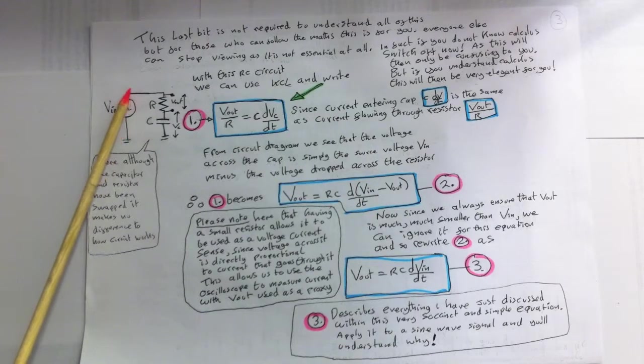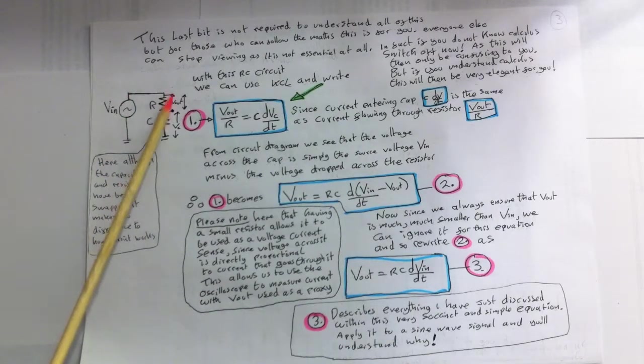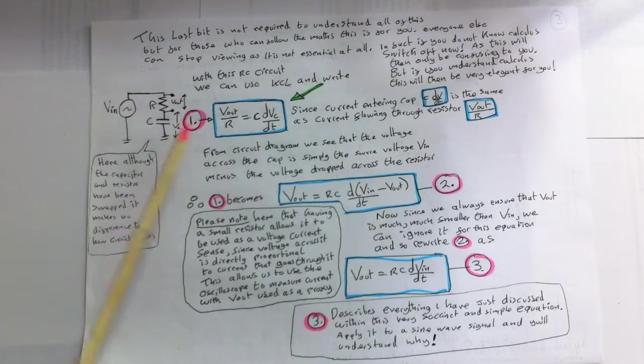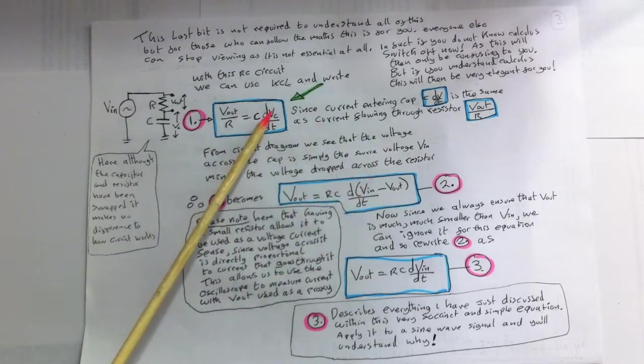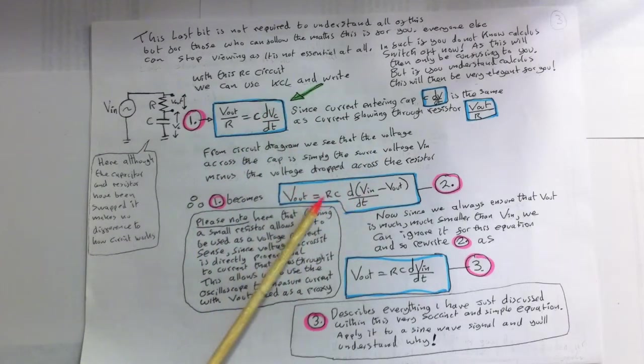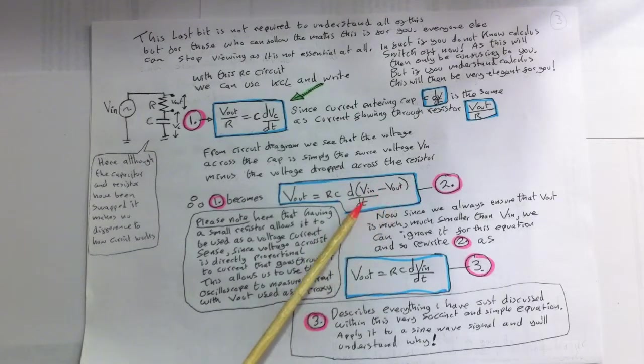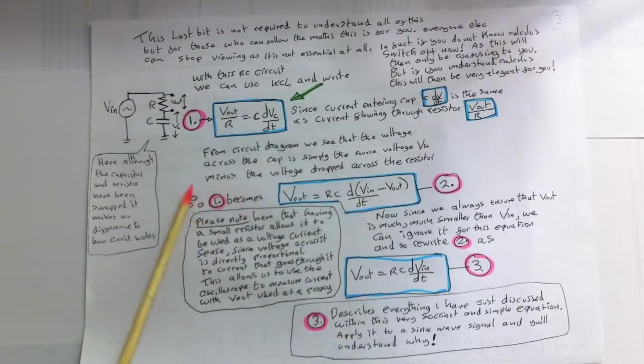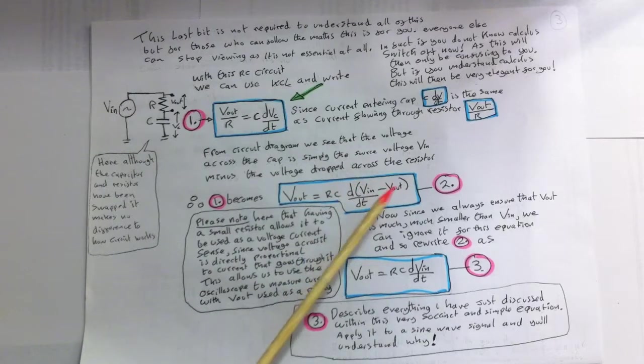So it's simply this voltage here, across here, minus this voltage is obviously Vc voltage. So then we can replace Vc here and write Vout equals RC dVin minus Vout over dt. So then this is now this.